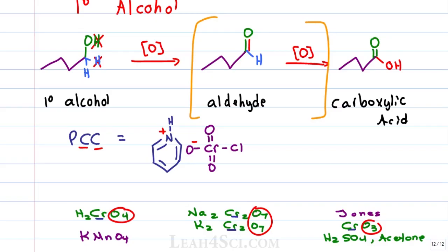In fact, one way that my students remember this is that PCC starts with a P, it's a prude and it doesn't go all the way. It stops at the aldehyde where all the other oxidation reactions will go straight to the carboxylic acid for a primary alcohol. In the next video, we'll look at the mechanism for how this works.